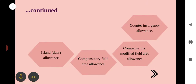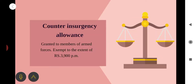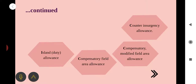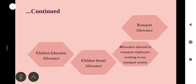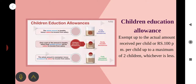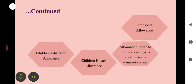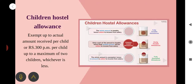Counter insurgency allowance is exempted to the extent of Rs. 3900 per month. Children's education allowance is exempted up to the actual amount received per child or Rs. 100 per child per month, whichever is less, for a maximum of 2 children. Hostel allowance is similar to children's education allowance but the amount is Rs. 300 per month per child, for a maximum of 2 children.